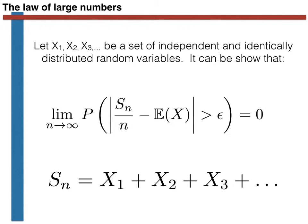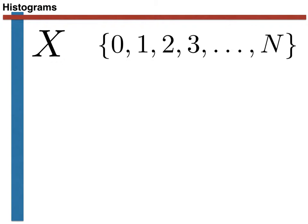The purpose of this video is to combine these two ideas and show you how we can use the law of large numbers to extract an estimate of the probability mass function. In other words, I want to show you how we can estimate the probability mass function that underlies a particular experiment by performing the experiment multiple times. Quite probably you already know how this is done, but let's work through the maths formally.